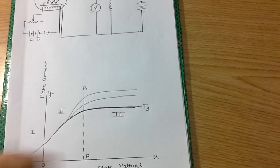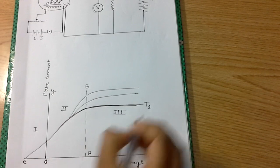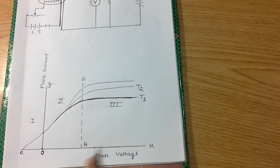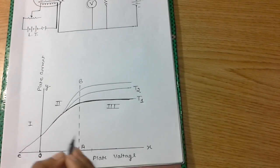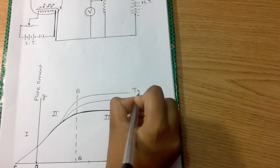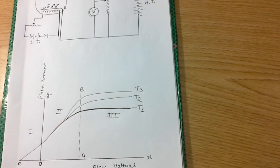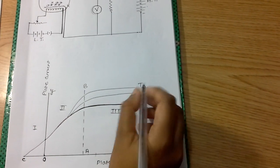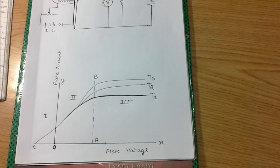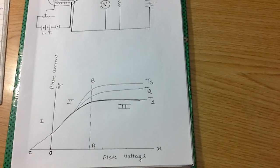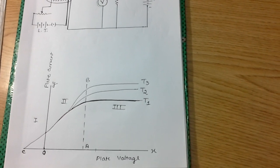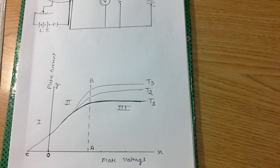If T1 is the initial temperature, on increasing the temperature to T2 the plate current will increase, and on T3 it will again increase the plate current. This is the simple working and characteristics of the diode valve. I hope this video is helpful for you. If you like this video, please like and subscribe.